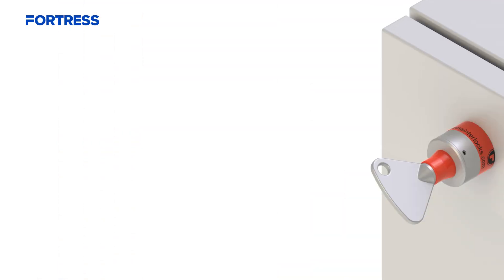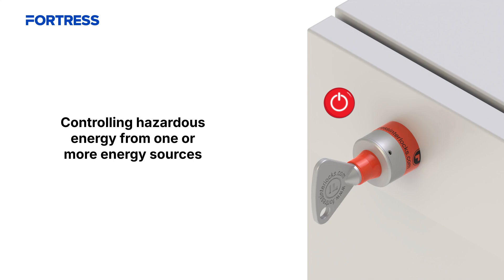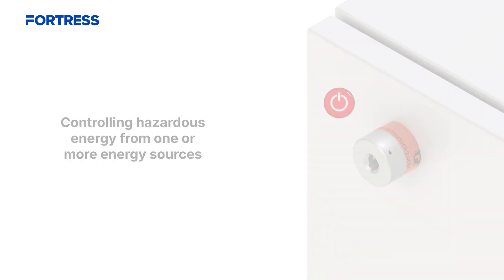First, hazardous energy — electrical, pneumatic, or hydraulic — must be controlled by turning the key in the energy control device. The key is then released, preventing the energy source from being accidentally turned on until it is returned.